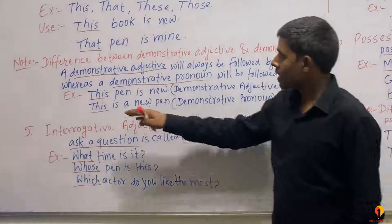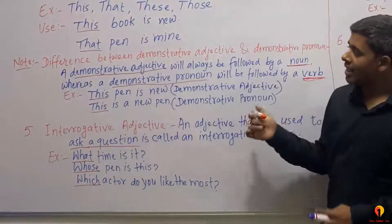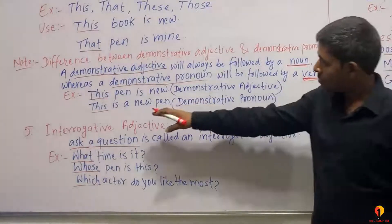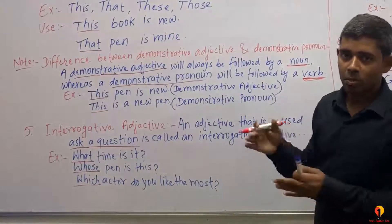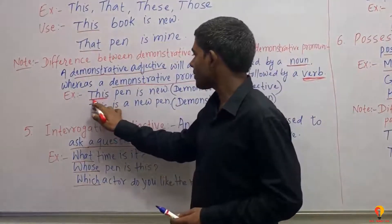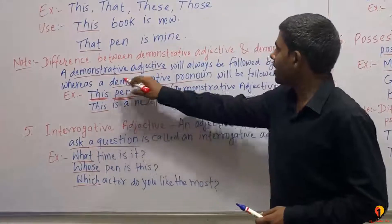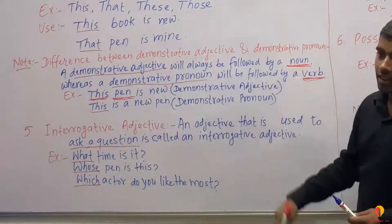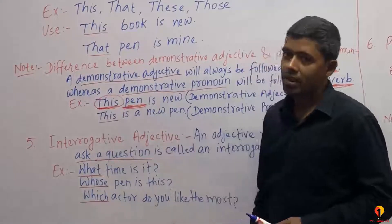Example: 'This pen is new' — here 'this' is followed by 'pen,' which is a noun, so 'this' is a Demonstrative Adjective. 'This is a new pen' — here 'this' is followed by a verb. How can we differentiate? In 'this pen is new,' pen is a noun, so 'this' here is a Demonstrative Adjective.